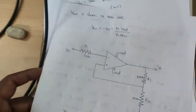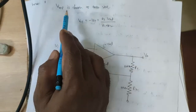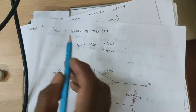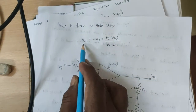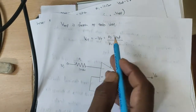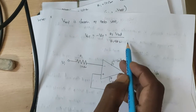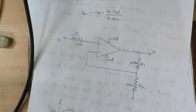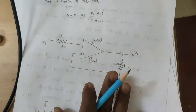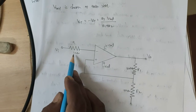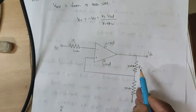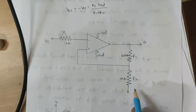In the practical, V_reference is chosen as 0V, so VUT equals minus VLT equals R2·Vsat by (R1 plus R2). This is the circuit diagram. The input resistance Ri is 1 kΩ, R1 is 100 kΩ, and R2 is 10 kΩ.